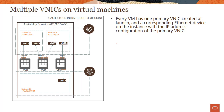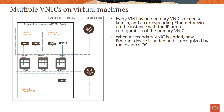Every VM has one primary VNIC, which is created when you launch the instance — we'll look at this in the demo. As you add secondary VNICs, a new Ethernet device is added and recognized by the instance operating system. As shown in this graphic, VM1 has only one single VNIC — a primary VNIC — and that VNIC1 is living in subnet A.